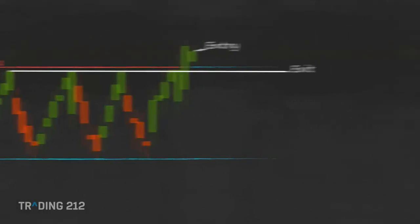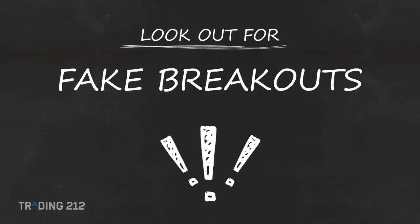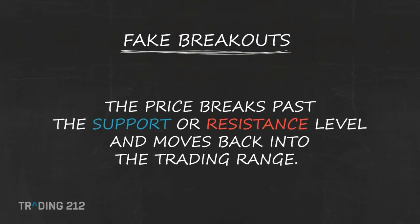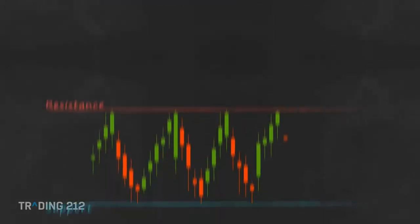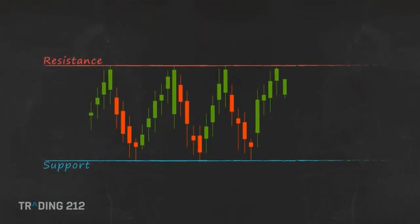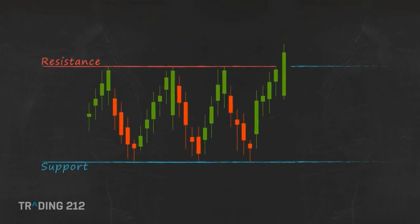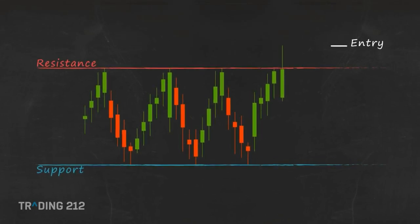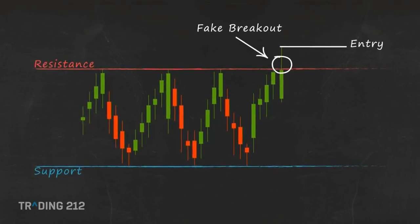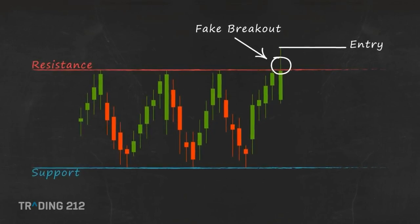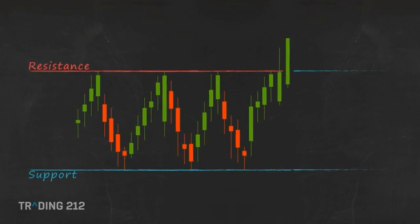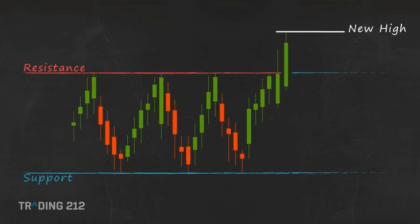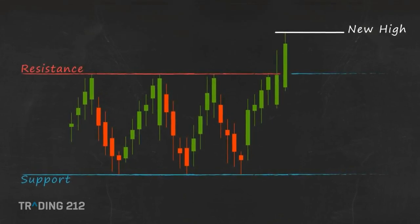One thing to look out for when trading breakouts is fake breakouts. Fake breakouts occur when the price breaks past the support or resistance level but instead of continuing its movement, the price moves back into the previous trading range. Here we can see the price breaks outside of the range but does not close above it — it returns back into the trading range. So if you had placed your entry there, you would have been caught in a fake breakout. To decrease your chance of trading a fake breakout, wait to see if the price will continue to move in the intended direction — for instance, wait for a new high before going long.